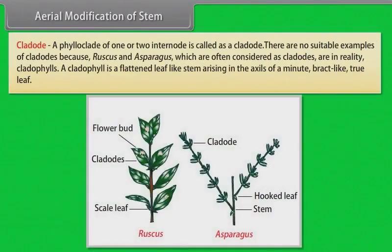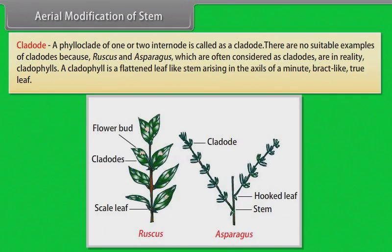A cladode is a phylloclade of one or two internodes. Ruscus and Asparagus, which are often considered as cladodes, are in reality cladophylls. A cladophyll is a flattened leaf-like stem arising in the axils of a minute bract-like true leaf.